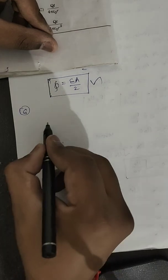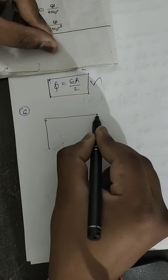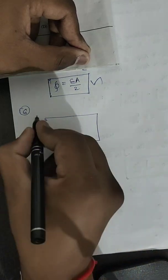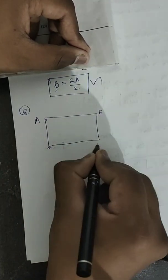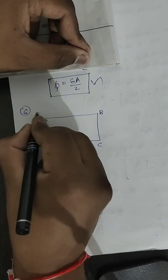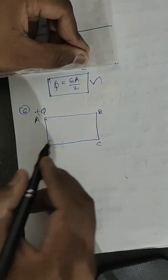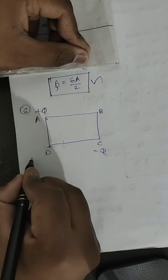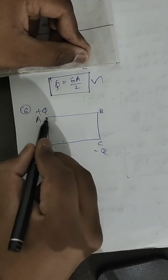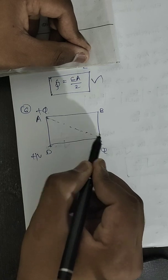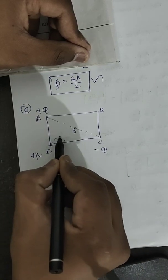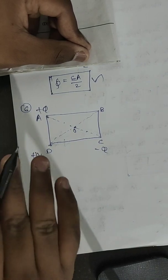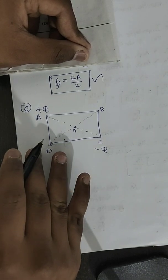For question number 6, suppose we have a square ABCD. Point A has +Q charge, point C has -Q charge, point D has a potential of 1 volt, and O is the point of intersection of the two diagonals. We need to find the electric potential at O using electrostatics principles.